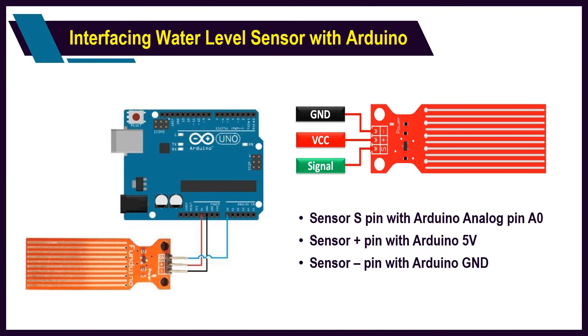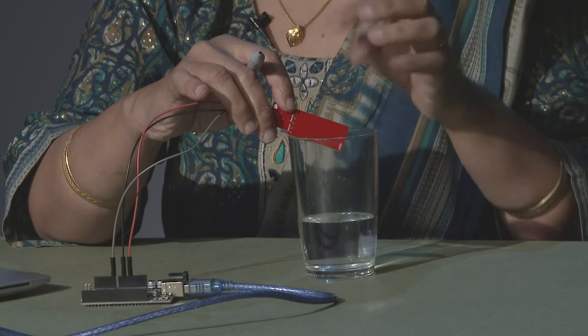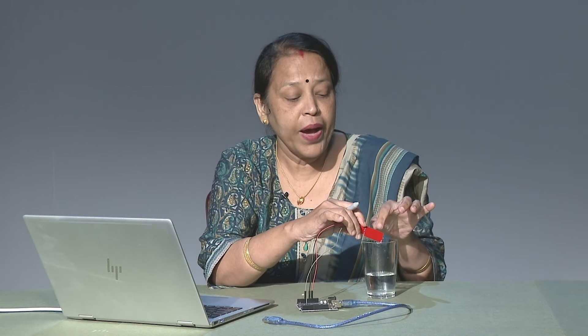We have connected to A0. When we connect this water level sensor to the Arduino and the Arduino is connected to the laptop, we can see the output in the serial monitor. When we dip this sensor in water, you can see the difference — as it goes down, the water level value increases; when it goes up, the water level value decreases.